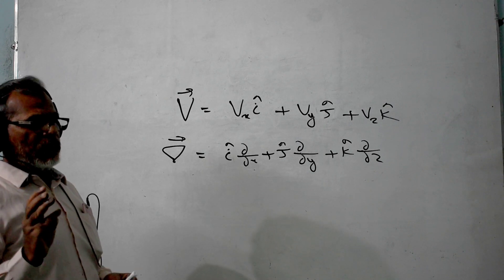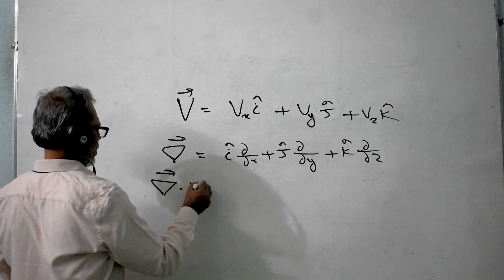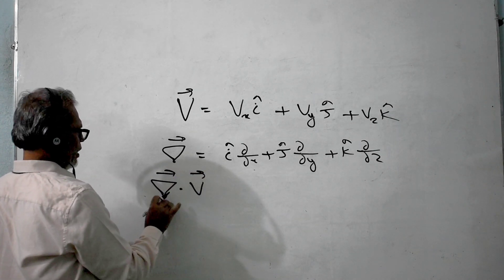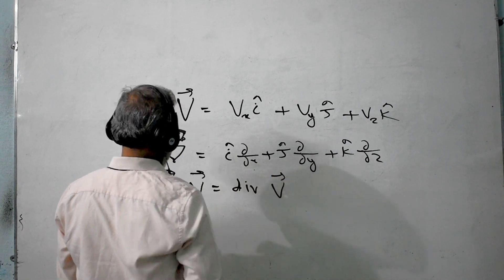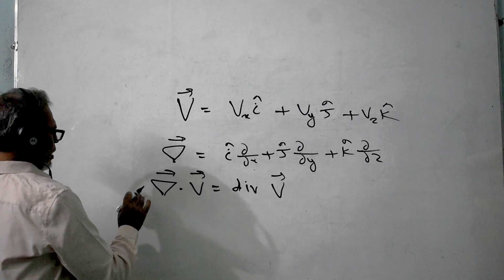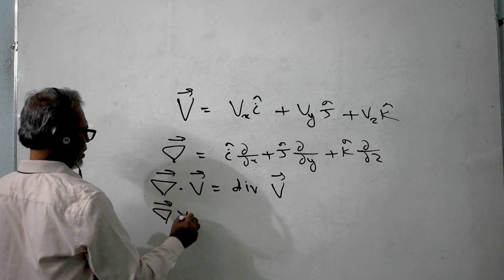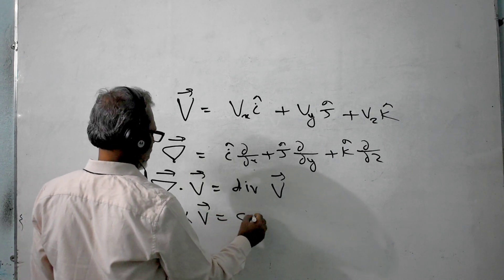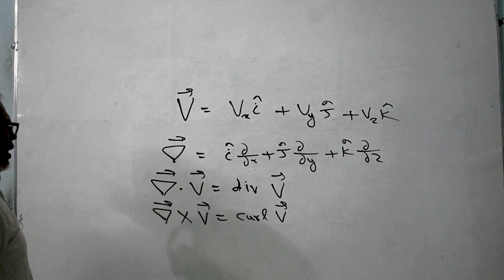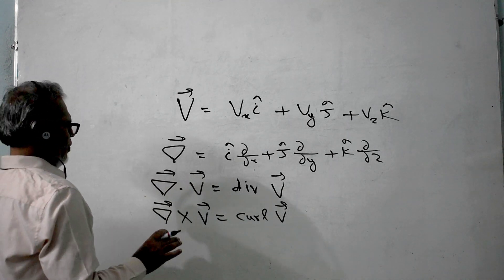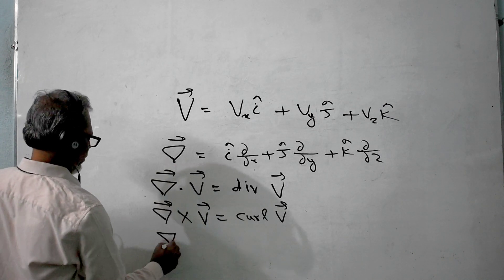The product of these two vectors — del dot V — is called divergence. It is also written as divergence of V. Next is curl: curl of vector V is written as del cross V. It may also be written as curl V.